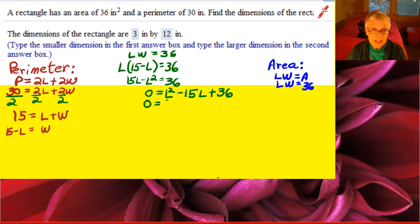Now this is very easy to factor, so I'm going to factor. If you don't want to factor, use the quadratic formula. But since I'm factoring, I'm going to set each factor equal to 0. That will give me L minus 3 equals 0 and L minus 12 equals 0.